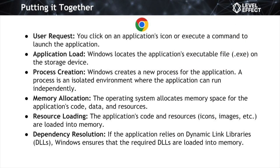That's a lot of technical knowledge at once, so let's walk through it as a process when you open up an application like Chrome. First, there's the user request — when you interact with an application by clicking its icon or entering a command, the operating system recognizes your request to launch it. Then the application needs to load: the operating system identifies the location of the application's executable file — with the .exe extension in Windows — on the storage device, allowing it to be accessed for execution. Upon initiating the application, the operating system generates a new process, providing an isolated environment where the application can operate independently with its own memory space and resources.